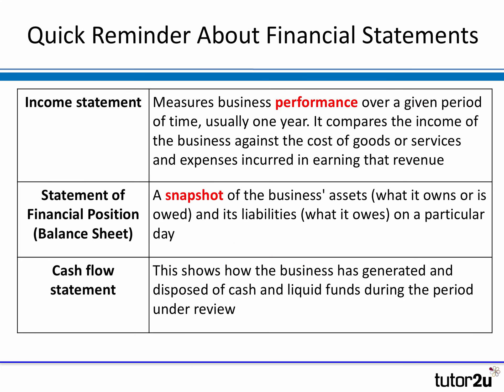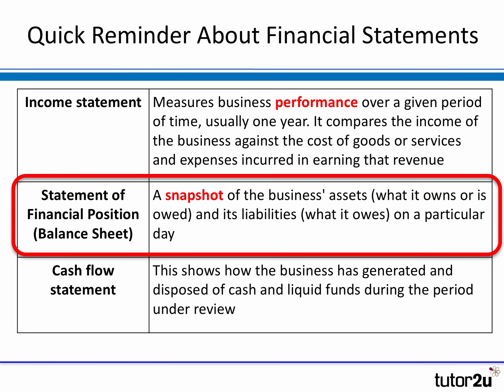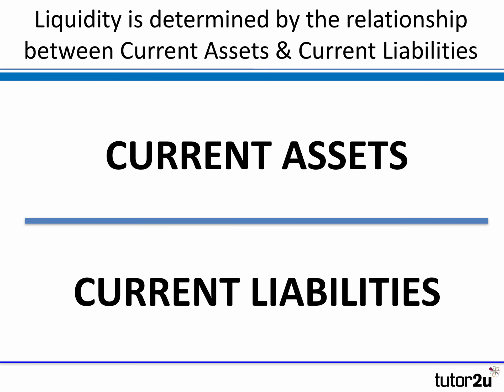The information you need to calculate liquidity ratios is not from the income statement, which looks at income and expenditure over time, or the cash flow statement, which looks at historical movements in cash. The information you need is drawn from the statement of financial position — more commonly known as the balance sheet. The balance sheet is a snapshot of what the business owns or is owed (assets) and what it owes to others (liabilities).